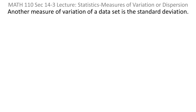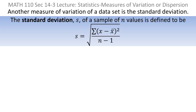Another measure of variation is the standard deviation. The standard deviation is defined by this formula, and we use the symbol s. The standard deviation is the square root of a fraction: in the numerator, you take x minus x-bar for every data point x, square that difference, and sigma means to sum — add them all up. Then you divide by one less than the number of data points, n minus 1. That's the formula for standard deviation.